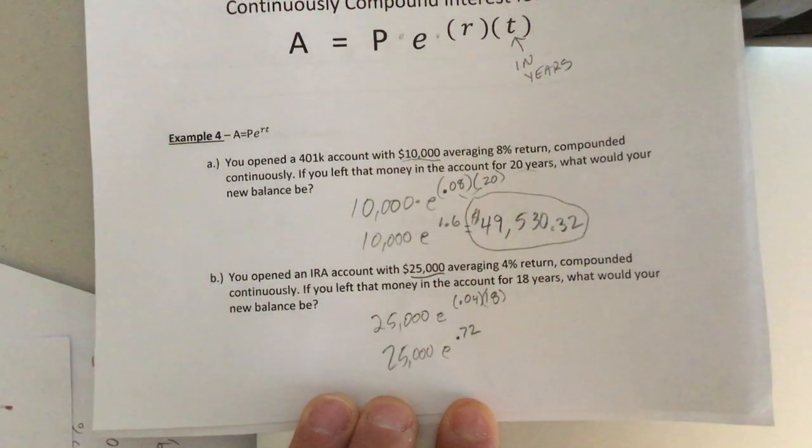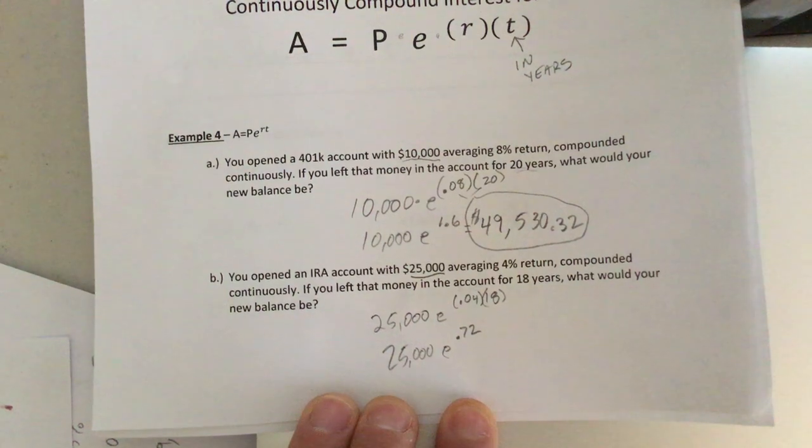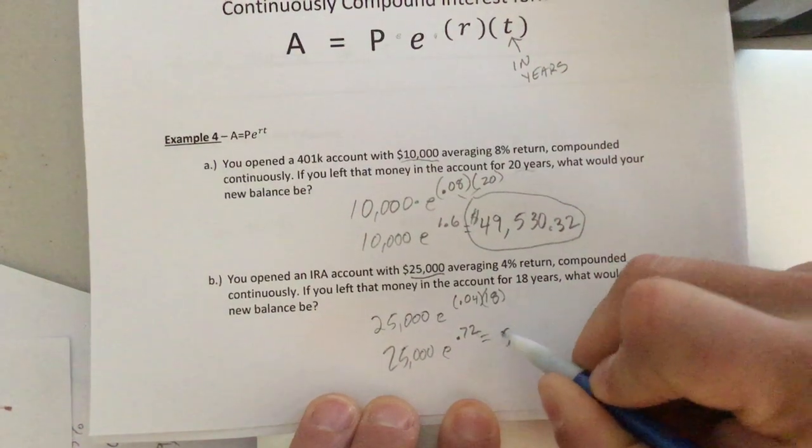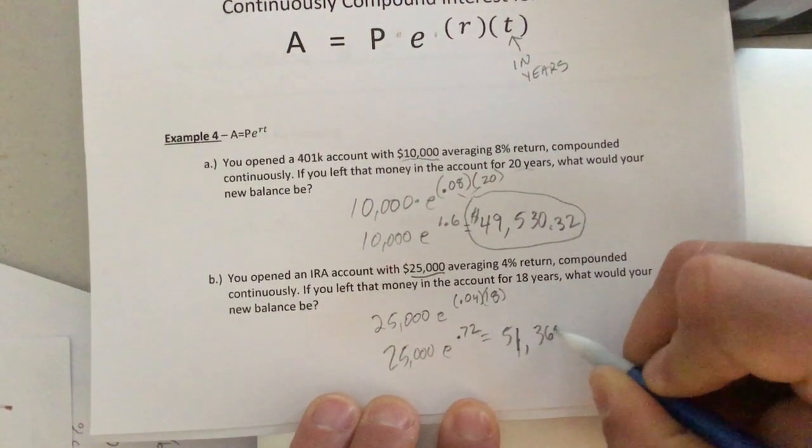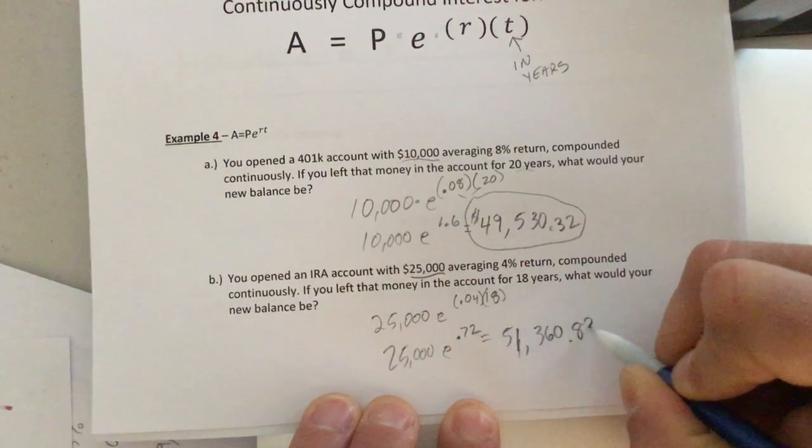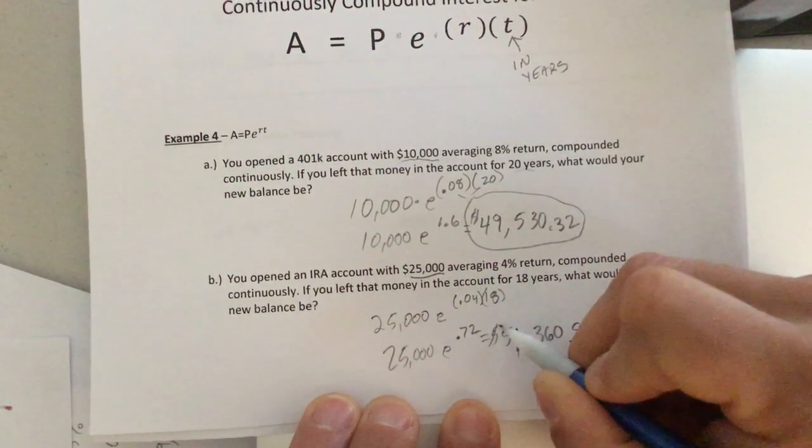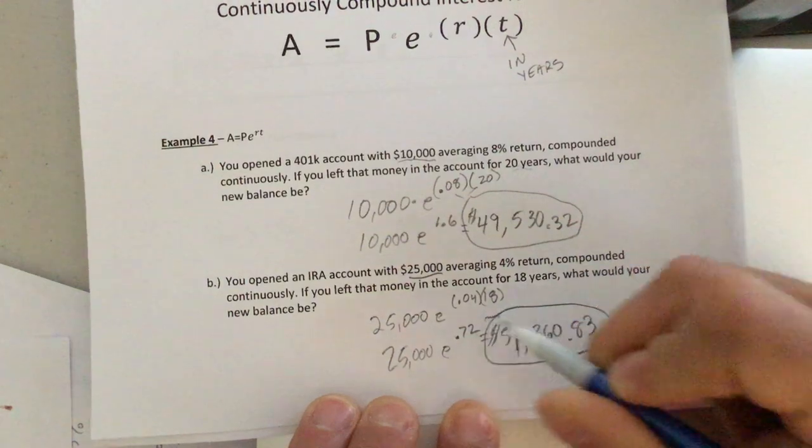Once again, if you're typing this in your cell phone, you'll type in 0.72, then press E to the X, then take that amount times 25,000. When it's all said and done, we end up with $51,360 and 83 cents. All right.